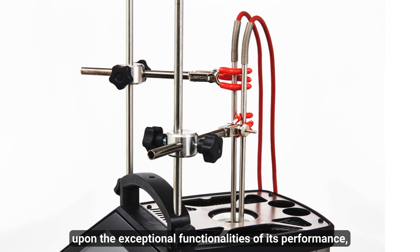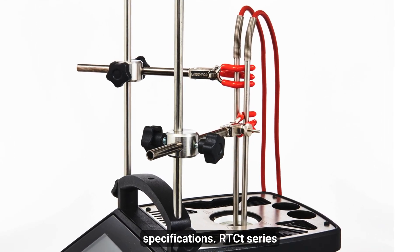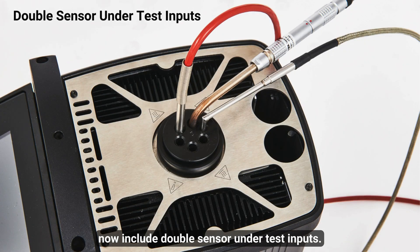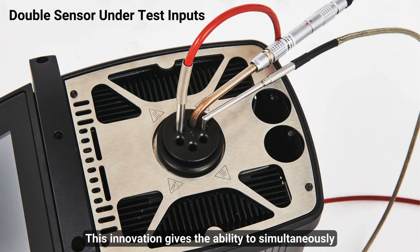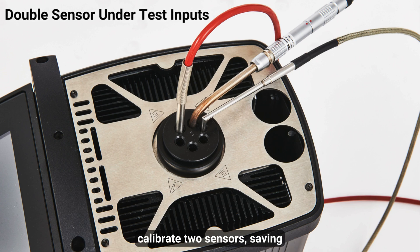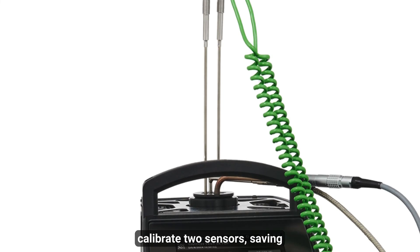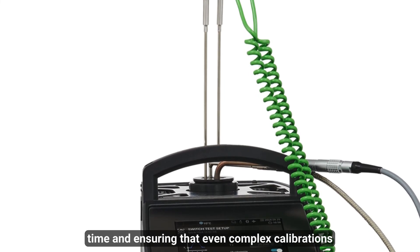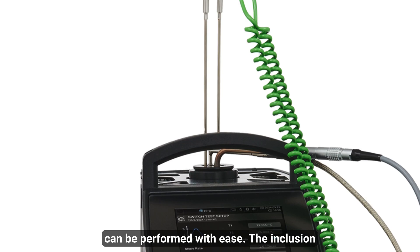Building upon the exceptional functionalities of its predecessor, the RTCT series now includes double-sensor under-test inputs. This innovation gives the ability to simultaneously calibrate two sensors, saving time and ensuring that even complex calibrations can be performed with ease.